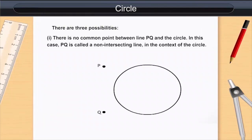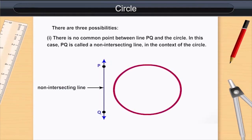One: There is no common point between line PQ and the circle. In this case, PQ is called a non-intersecting line in the context of the circle.